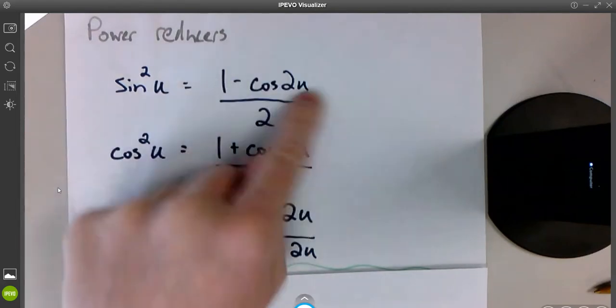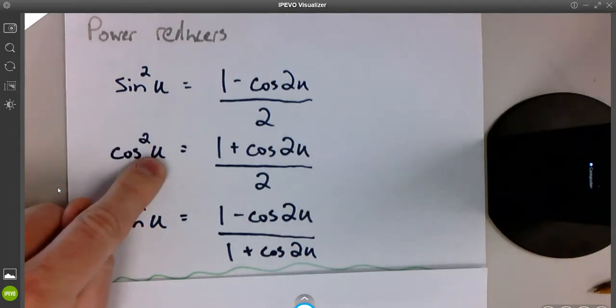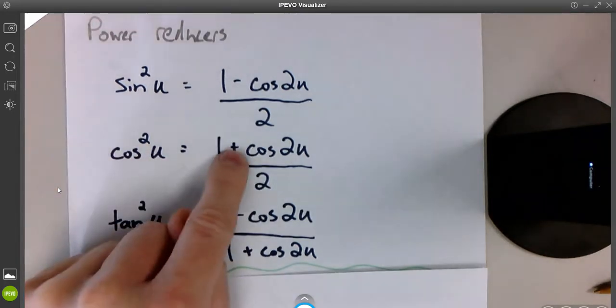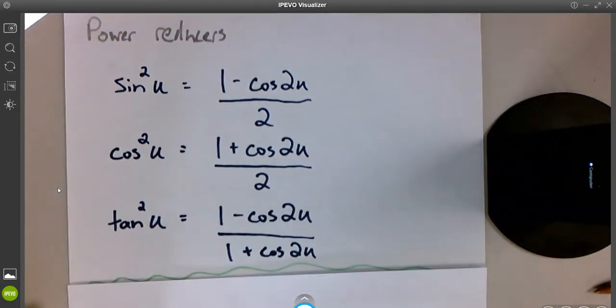We're going to double whatever the argument is every single time. If it was cosine squared 5u, I could use this formula. It would be 1 plus cosine 10u over 2. We can use these formulas, run them through. We're just going to double the argument each time.